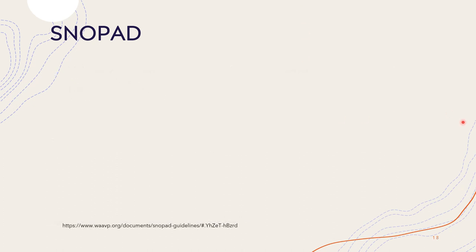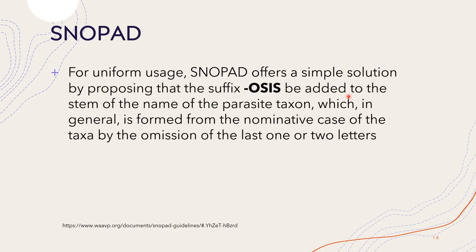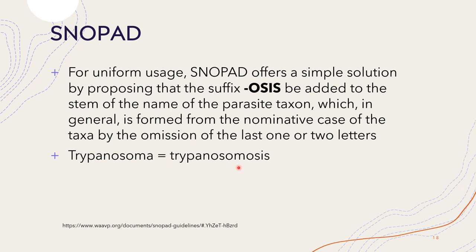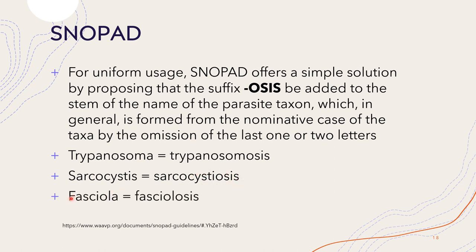Another source of nomenclatural heterogeneity comes from variation in the stem of words, formed either from the nominative — for example, trypanosomosis, hypodermosis — or from the Greek genitive — for example, trypanosomatosis, hypodermatosis. For uniform usage, SNOPAD proposes that the suffix -osis be added to the stem of the parasite taxon name, generally formed from the nominative case by omitting the last one or two letters. Examples: Trypanosoma → trypanosomosis; Sarcocystis → sarcocystosis; Fasciola → fasciolosis.